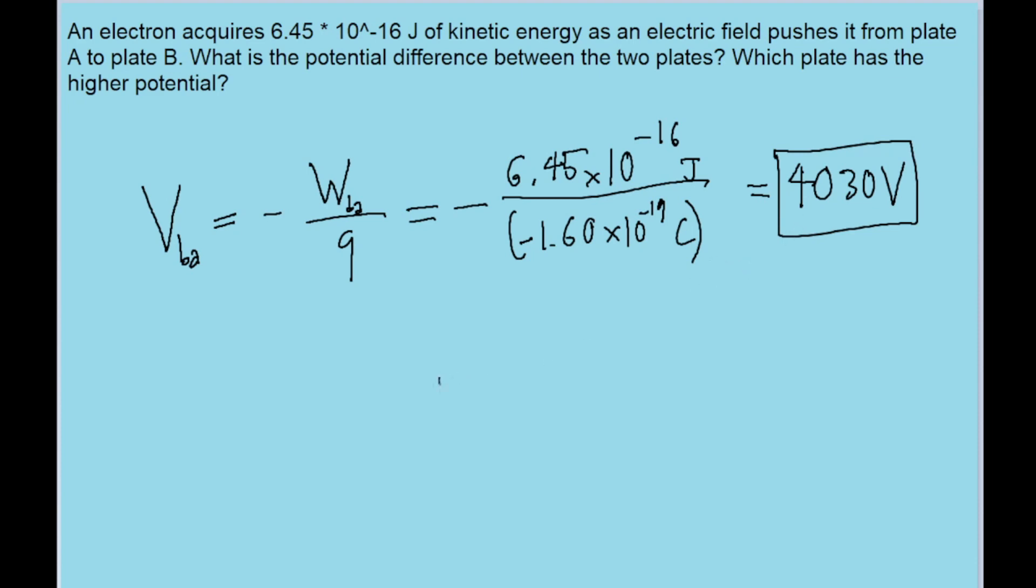Which means that plate B must have the higher potential because it's a positive number. So that answers the second part of the problem, which asks about which plate has the higher potential.